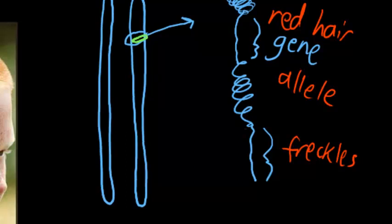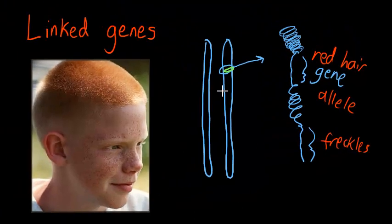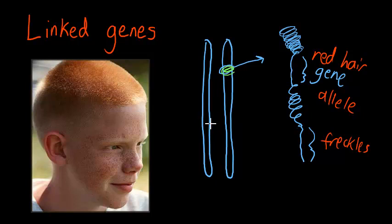Remember in meiosis, sometimes the chromosomes can shuffle. And we talked about that as crossing over. They shuffle, they exchange genes. Well, in this case, these two are so closely related, so close together, that they don't shuffle. That they're inherited together.